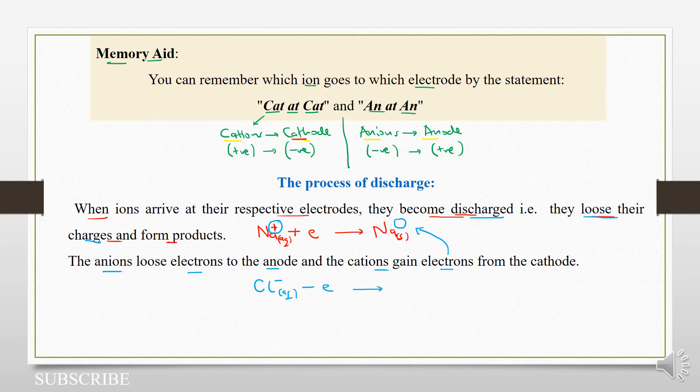This will form our chloride atom. It won't exist on its own, but let us just leave the state symbol to form our chloride atom. So you will see that this charge will now be lost.